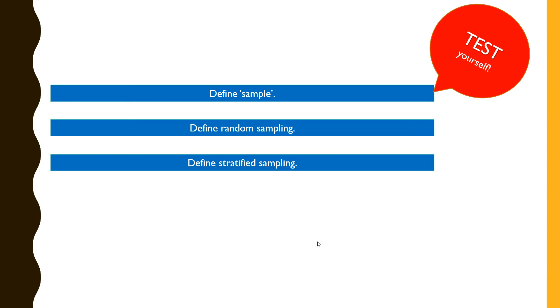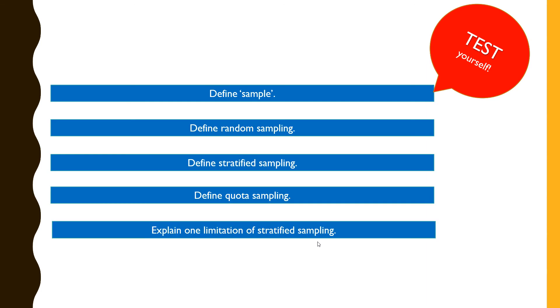Now to help you practice on your own, these are five questions for you to look at: to define sample, to define random sampling, to define stratified sampling, quota sampling, and also one limitation of stratified sampling. Try to attempt this on your own.